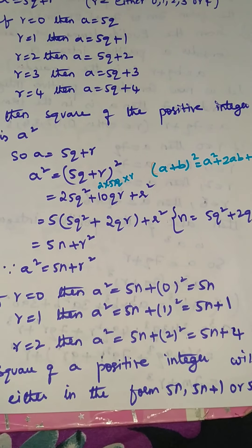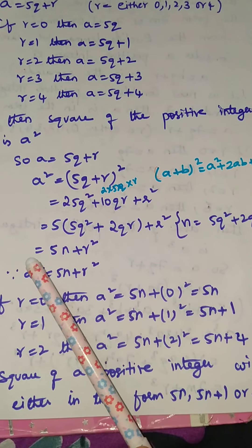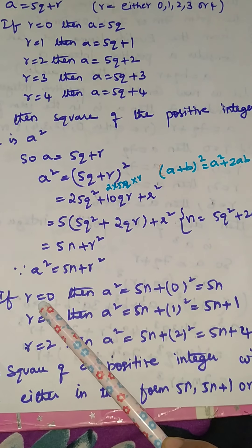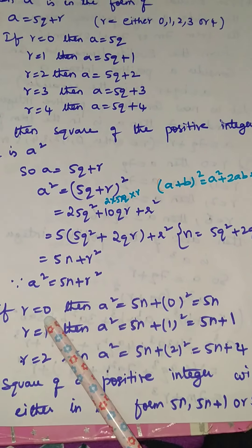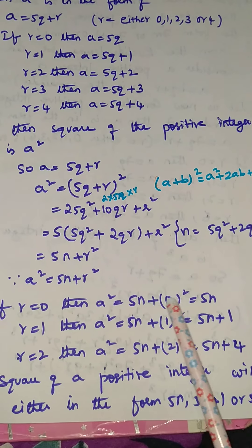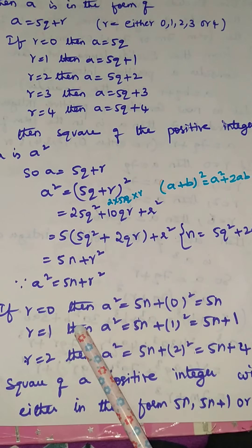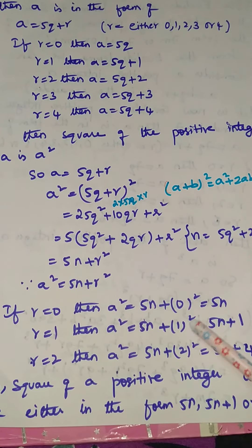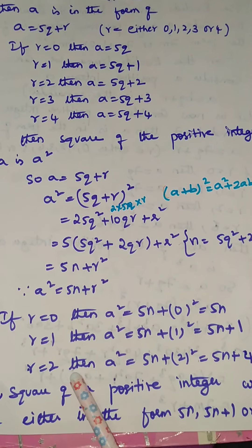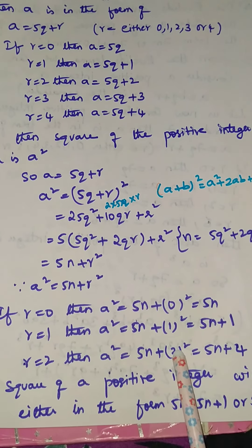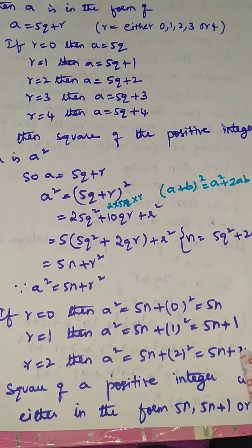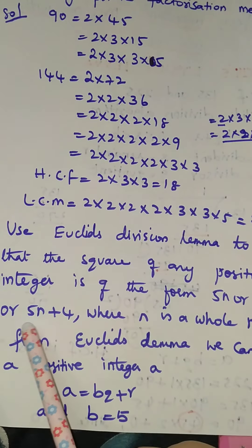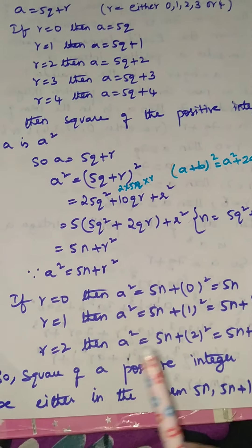Now substitute each value of r into a² = 5n + r². If r = 0: a² = 5n + 0 = 5n. If r = 1: a² = 5n + 1² = 5n + 1. If r = 2: a² = 5n + 2² = 5n + 4. Since 5n + 4 is given in the question, we stop here.